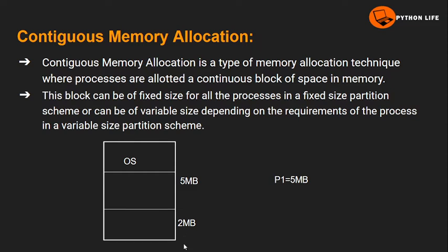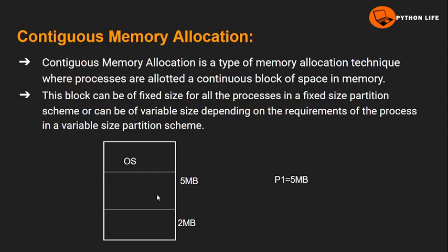For example, here is the main memory divided into the operating system part and the user part. The user part is divided into partitions — first partition size 5MB and second partition size 2MB.